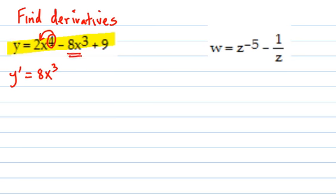Then we move on to this term and we take the 3, hit it down in the front to get negative 24. Decrease the exponent to 2. And then the derivative of 9 is 0. So that's it.